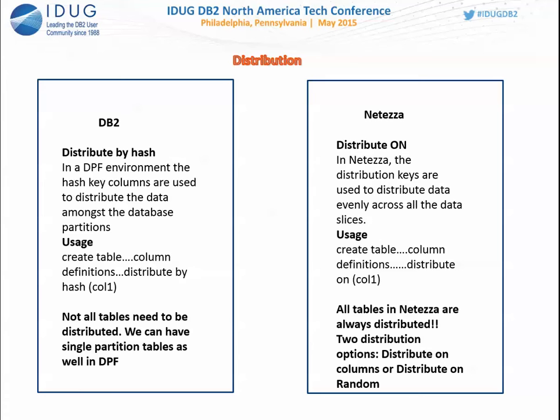All tables in Netezza must be distributed — unlike DB2 where you can have single-partition tables. Netezza doesn't give you that option. However, it provides two distribution options: DISTRIBUTE ON (column), which uses the hashing algorithm; and DISTRIBUTE ON RANDOM, which puts the first row in one SPU, the second row in the next SPU, and so on — a simple round-robin distribution.